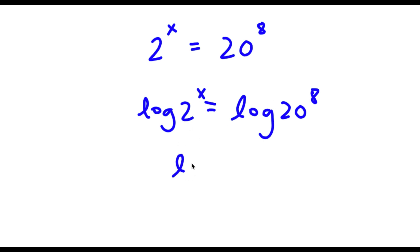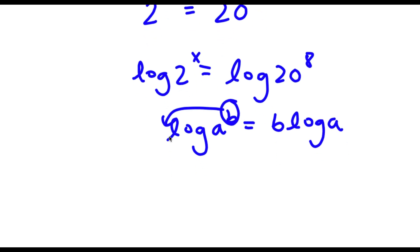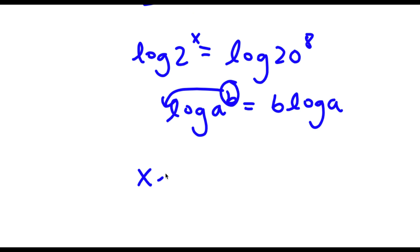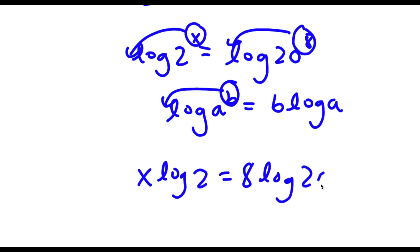Now if I have something in the form log a to the power of b, I can simply move this exponent b to the front — so this equals b times log a. So now I have x times log 2, I simply moved x to the front, and I do the same with 8, giving me equals 8 times log 20.